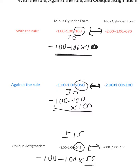When you have plus cylinder form, it's completely opposite. When you have with the rule astigmatism, the axis is within 30 degrees of 90. When you have against the rule astigmatism, it's within 30 degrees of 180. Keep in mind, it depends strongly on the form of the eyeglass prescription you are given.